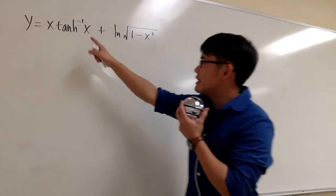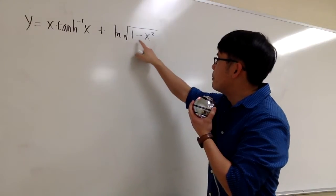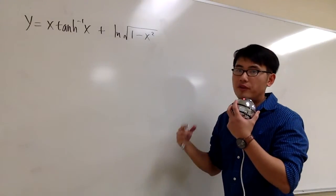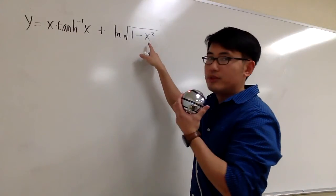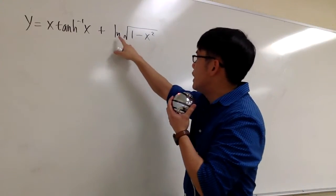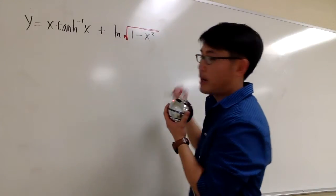Let's differentiate x times inverse tangent x plus ln of square root of 1 minus x squared. Before we do the derivative, this part we can do some algebra with it. Because we have ln of a square root, and usually we like to look at square root as to the 1 half power.